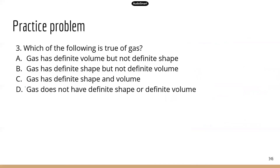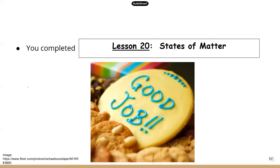Number three: which of the following is true of gas? Gas is the least orderly pattern — the molecules are really spread out in space. So gas does not have a definite shape or a definite volume. The correct answer is D: no definite shape, no definite volume. All right, we're done with this lesson. Good job, guys.